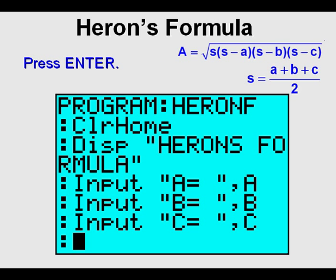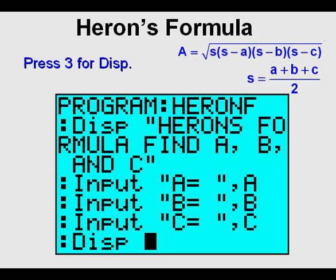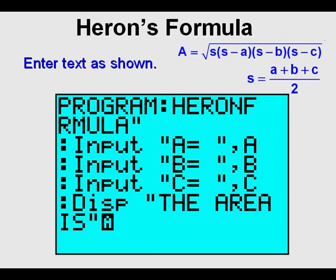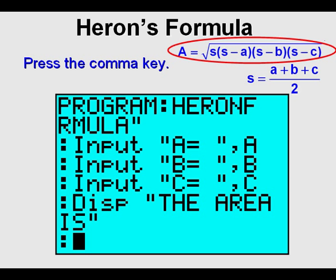Press Enter. Press the program key, arrow once to the right, press 3 to choose Display. Prepare to enter a string of text by pressing 2nd, then the alpha key. Enter the code as shown: The area is. Make sure that it's within quotation marks. Press alpha to get out of alpha mode, then press Enter. Next, we will enter Heron's formula as an expression into our program. Wherever S appears, we need to replace it with quantity A plus B plus C over 2.